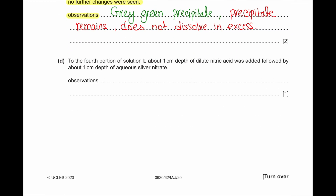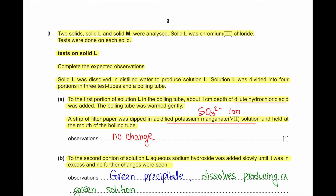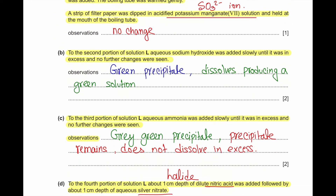Part D: To the fourth portion of solution L, 1 cm depth of nitric acid followed by 1 cm depth of aqueous silver nitrate was added. Nitric acid followed by silver nitrate is a test for halides. Since this experiment already has chloride present, we get a white precipitate.